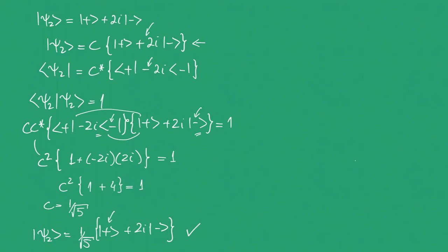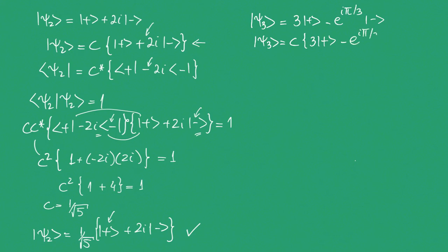Finally, let's suppose we have a quantum state given by ket ψ3 equals 3 ket plus minus e^(iπ/3) ket minus. It seems complicated but it's actually not. Following the same steps, we introduce a normalization constant c, giving c times 3 ket plus minus e^(iπ/3) ket minus. Taking the complex conjugate gives bra ψ3 equal to c star times 3 bra plus minus e^(−iπ/3) bra minus. Note that the sign of the exponent argument changed.